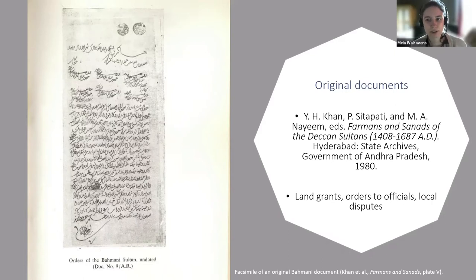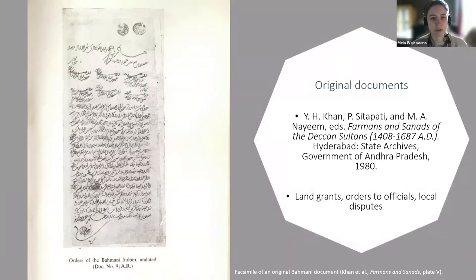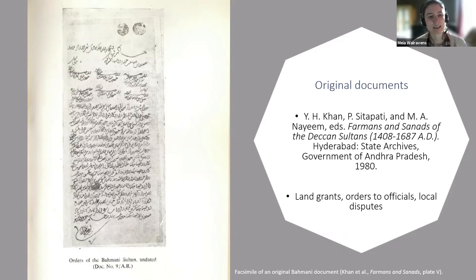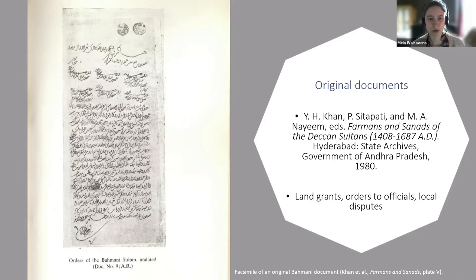As far as the administrative offices of the Bahmani Sultanate are concerned, there are only very few primary sources that could tell us about how official documents looked — their structure, layout, formulae, and conventions. Only a few, fewer than ten original chancery documents have been published in a publication by Khan, Sittapati, and Naim, with transcriptions, English summaries, and photographic copies. They are not letters in the strict sense — they're mostly land grants, orders to officials, and rulings about local disputes — but they often have a letter-like structure.